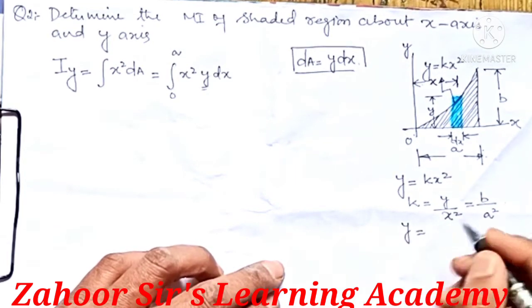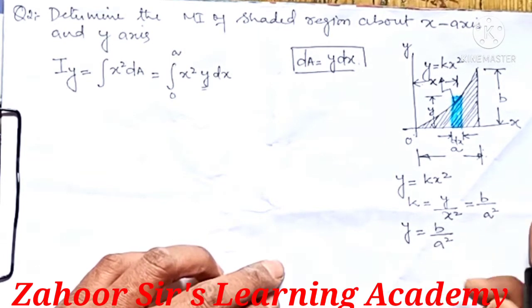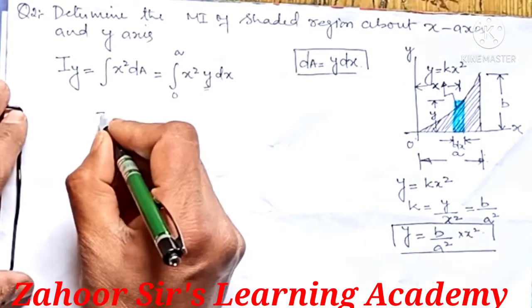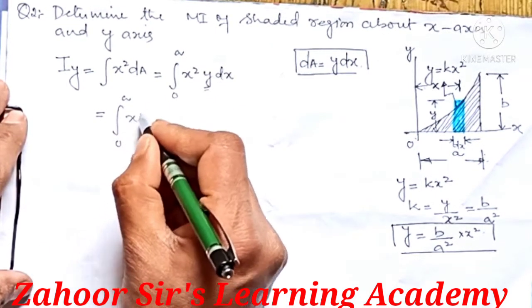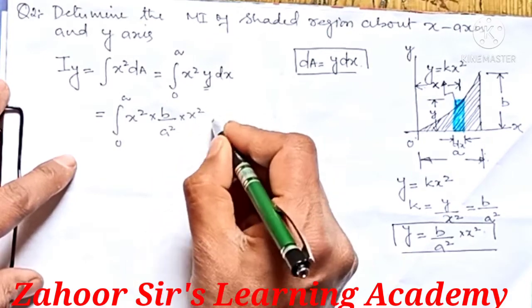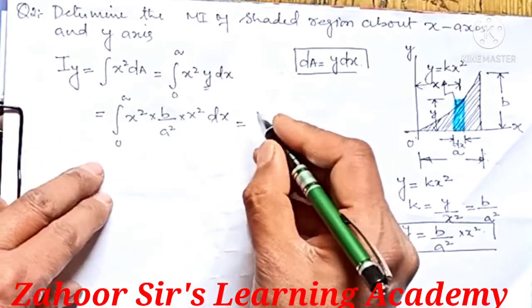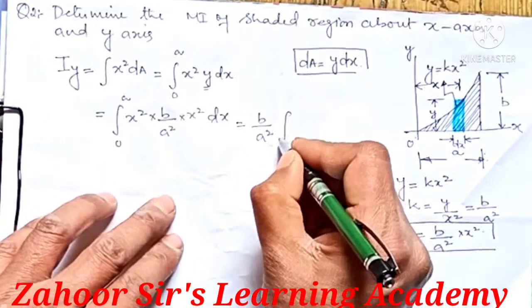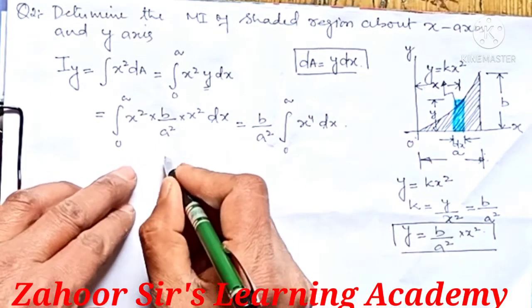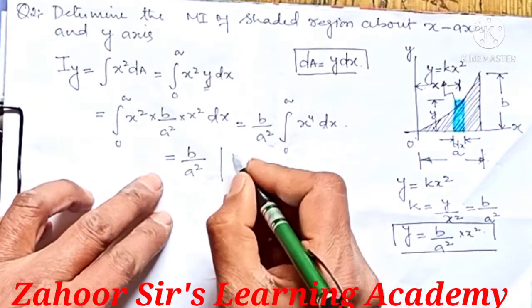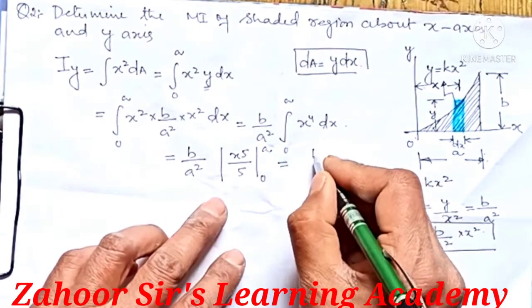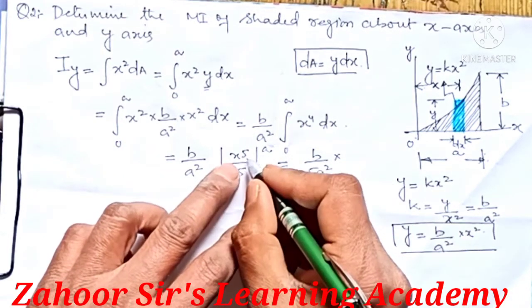Substituting, y = (b/a²)x². We write the integral from 0 to a of x² · (b/a²)x² dx. Taking the constant b/a² out, we get (b/a²) ∫₀ᵃ x⁴ dx. Integrating: (b/a²) · [x⁵/5] from 0 to a. Simplifying, this gives b/(5a²).